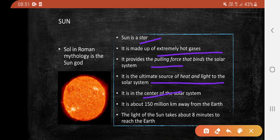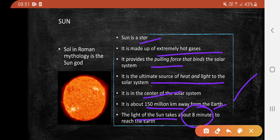It is in the center of the solar system and is about 150 million kilometers away from the Earth. The light of the sun takes about 8 minutes to reach the Earth.